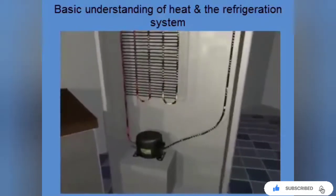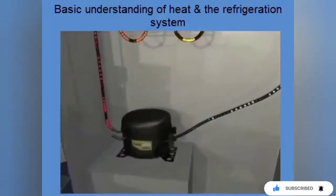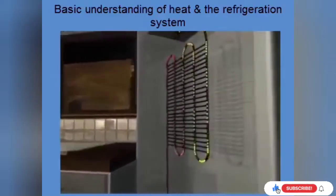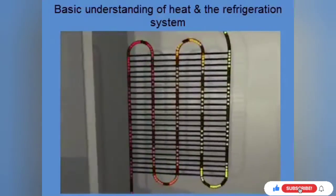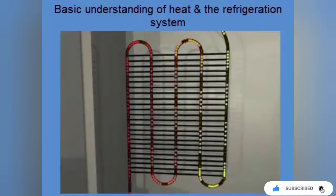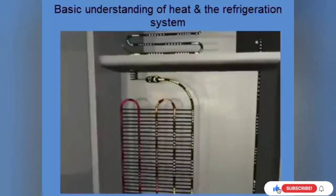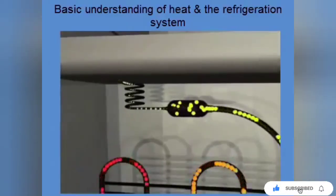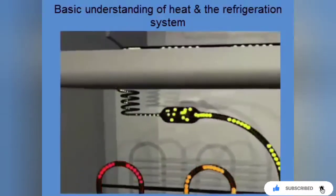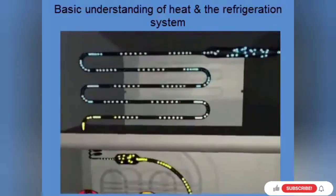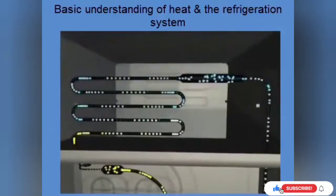The compressor transports the gaseous refrigerant to the condenser. The condenser is the black frame on the back of the equipment. The refrigerant is liquefied by the heat emission to the environment. The liquid refrigerant enters the evaporator through the capillary tube, which reduces the refrigerant's pressure. Only through this can the refrigerant absorb heat and evaporate. The refrigerant takes up the heat from the cooling compartment and becomes gaseous. The completely gaseous refrigerant is then sucked in by the compressor again and the cycle begins anew.